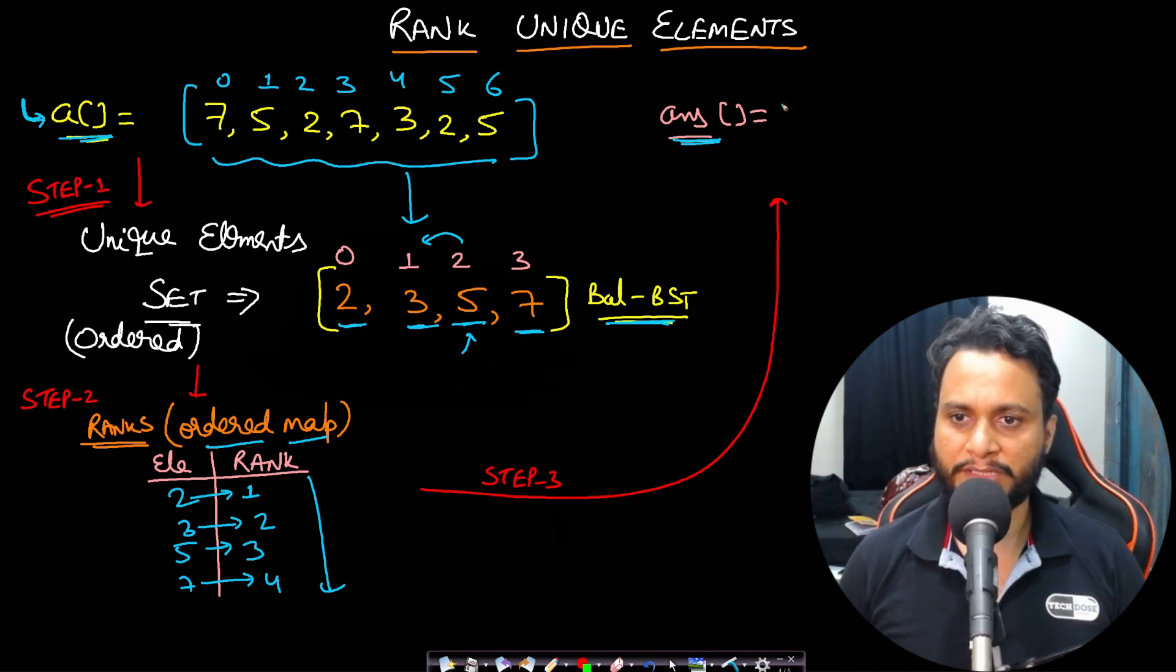Now having done step two, we need to return our answer array, which is a separate array. So we will make it of the same size as the input array because all the elements will get a rank. And now iterate through the array.